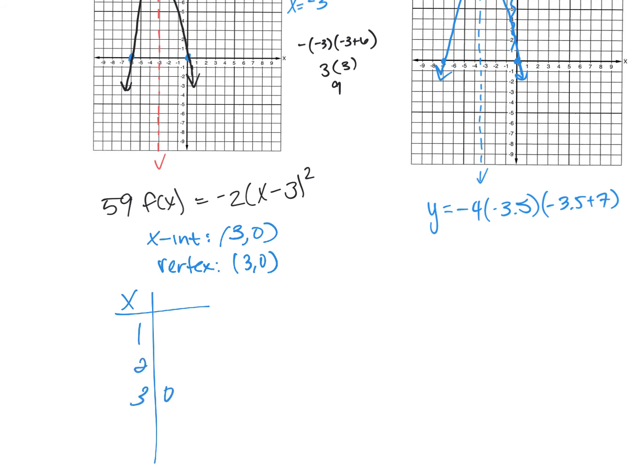And then I got 2 and 1, 4 and 5. So plug in 2. Negative 2 times 2 minus 3 squared. Negative 2 times negative 1 squared. Remember, we have to do what's inside the parentheses, then square it, which is negative 2 because that's positive 1 times negative 2. And then the 4 because I have symmetry and my vertex is correct.